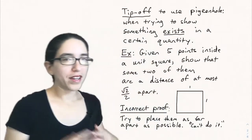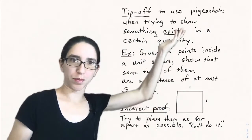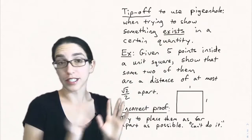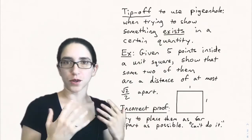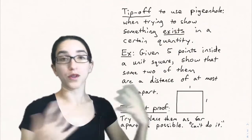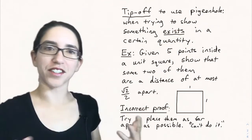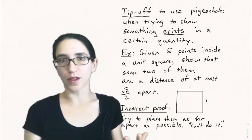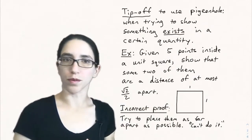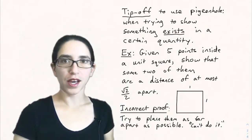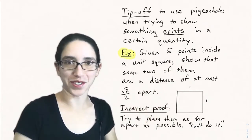When do you use the pigeonhole principle? A tip-off is when you're trying to show something exists — when two of something exists, or three of something exists. When you want to show something exists in a certain quantity, the methods are usually either proof by contradiction or the pigeonhole principle. If you can see the right pigeons and holes, the pigeonhole principle can be the solution.